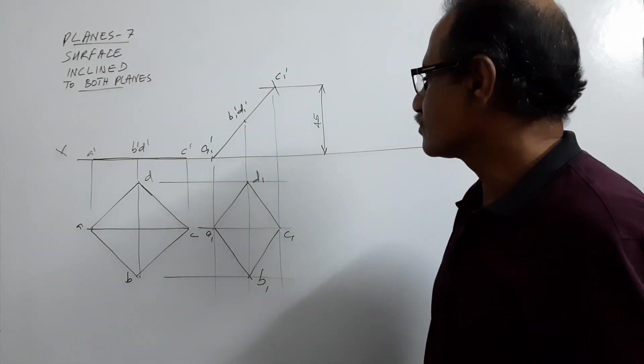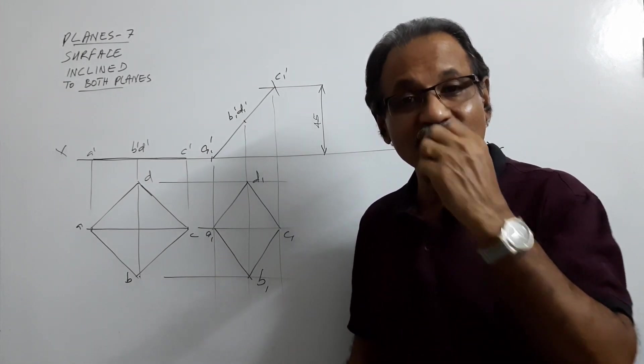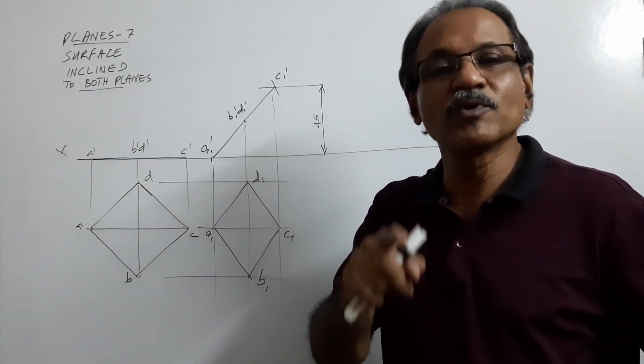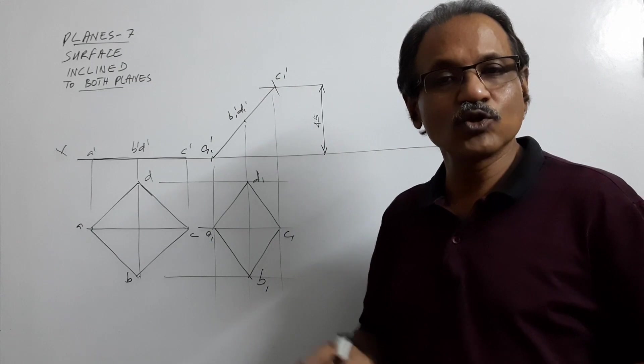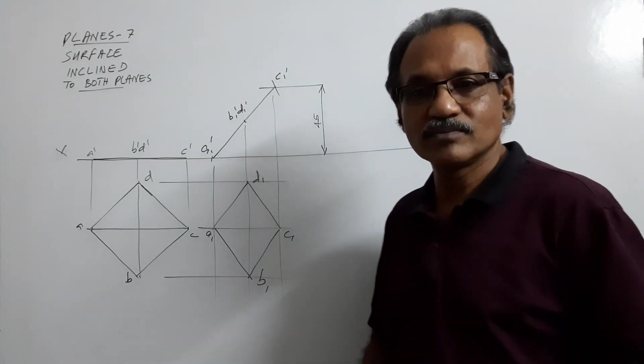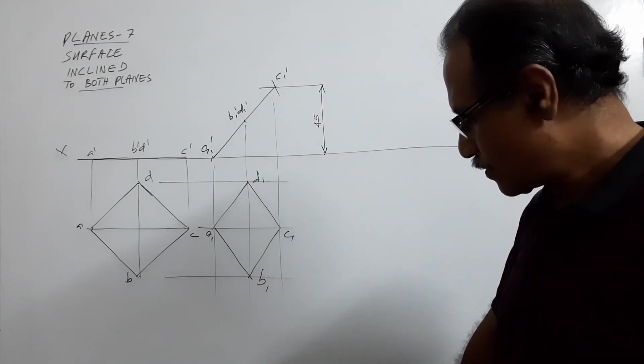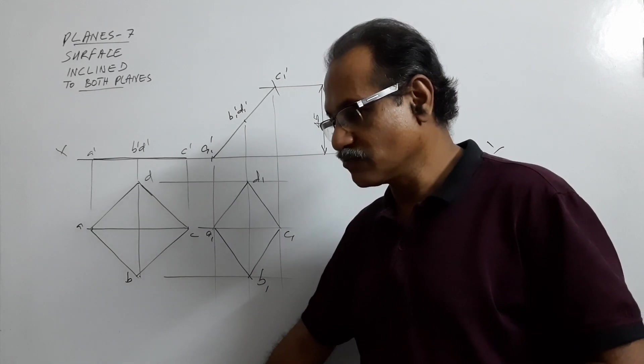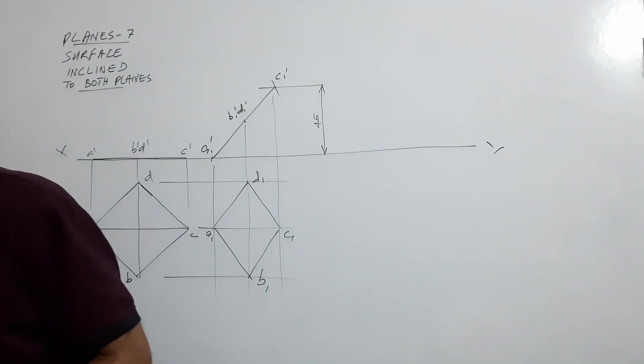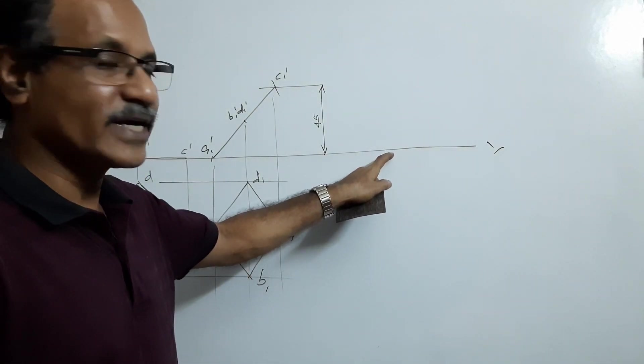You don't know how much it is, you are not bothered, the question doesn't ask that. Now this is to be redrawn. How will you redraw? What is the condition to be satisfied when this is redrawn?